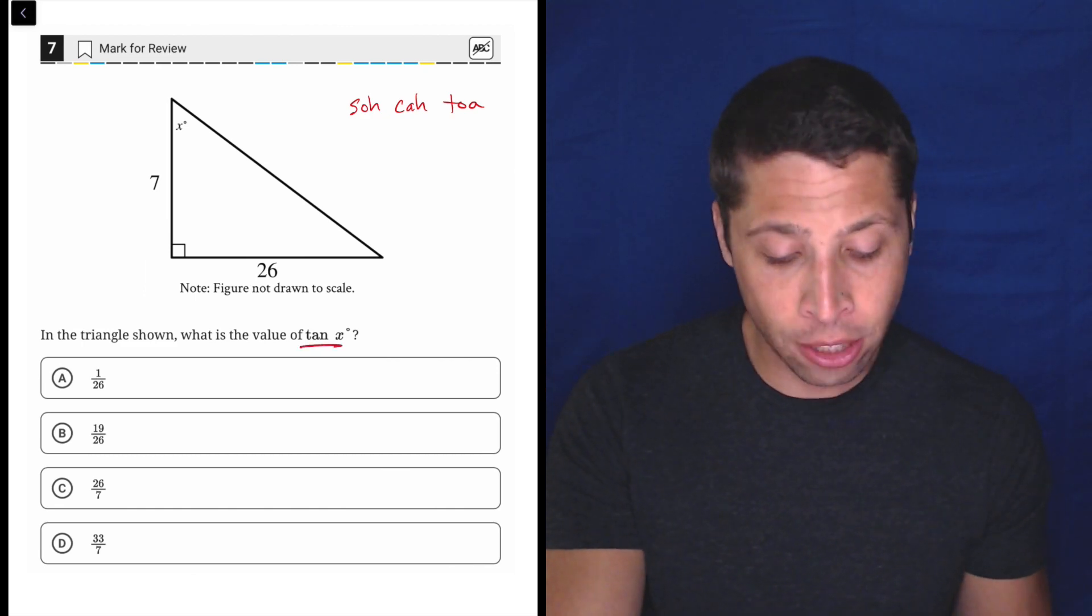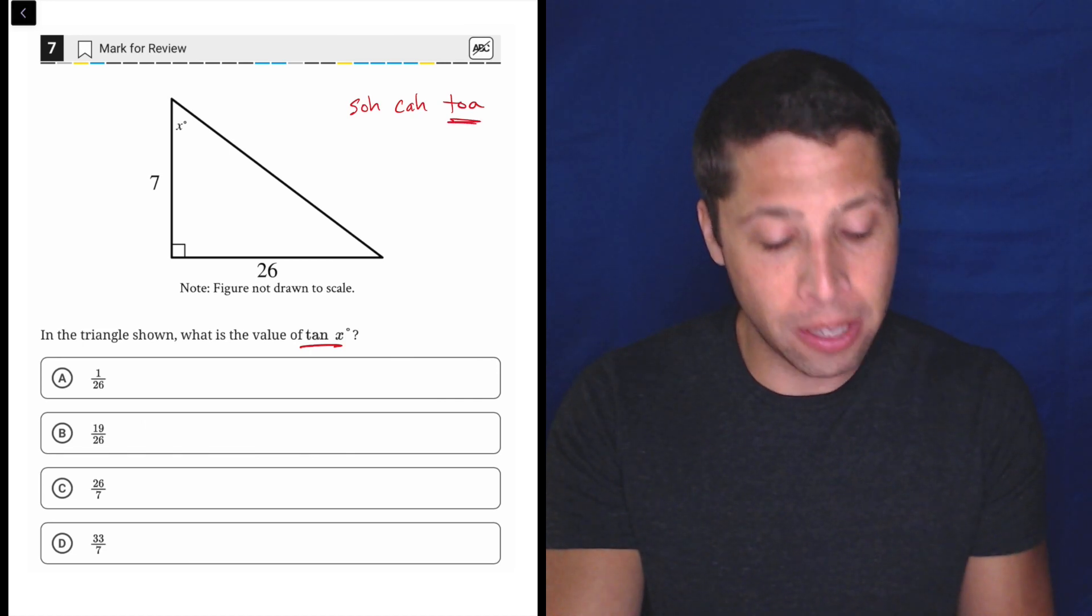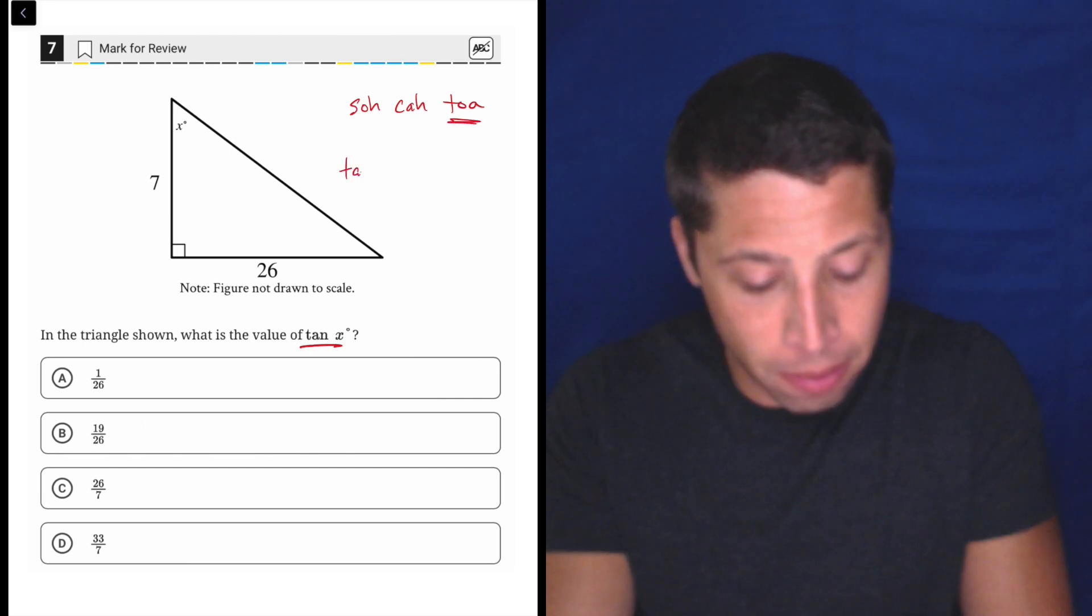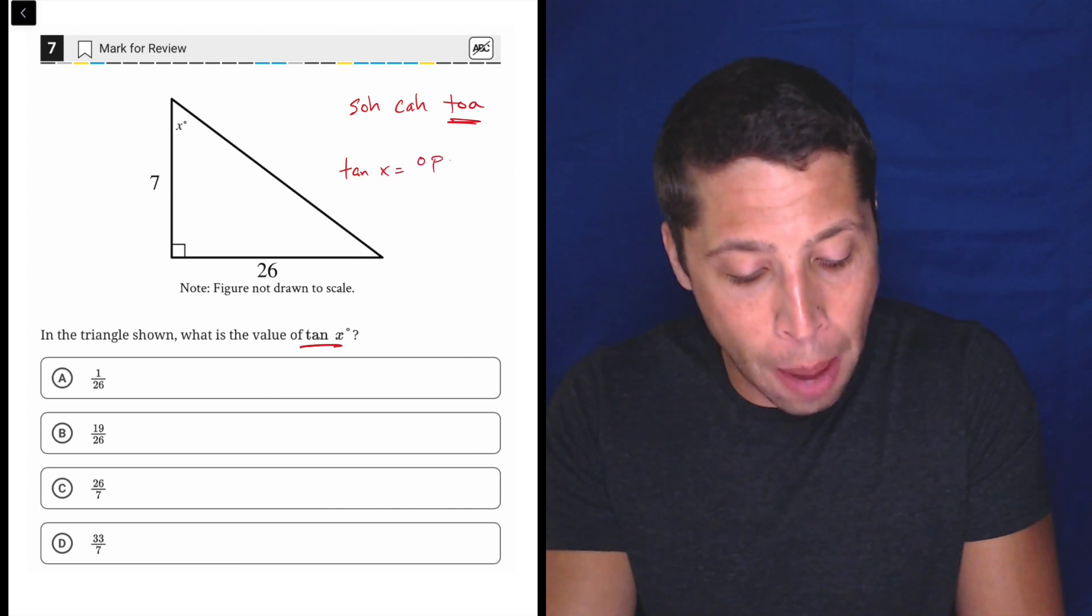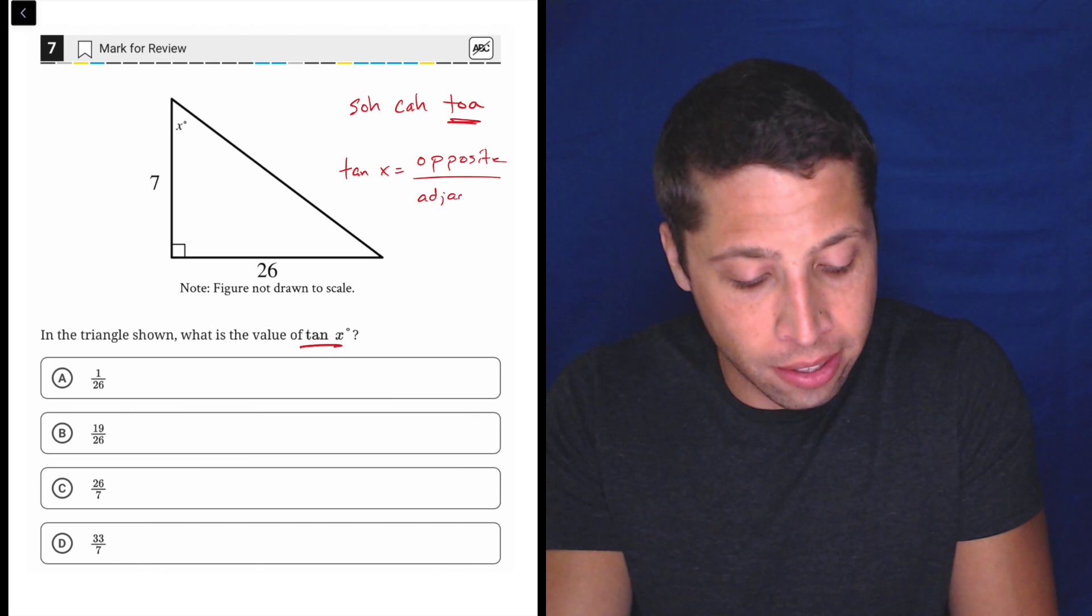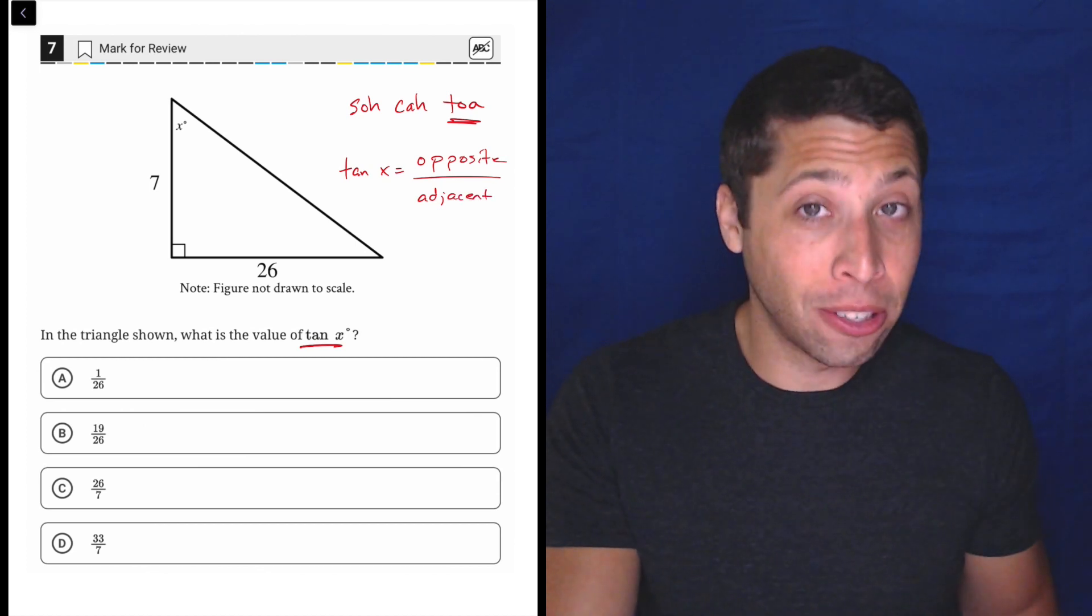In this case, they want the tangent of X, so tangent means TOA. And what does that actually mean? That the tangent of X is going to be the opposite side from our angle over the adjacent side. So luckily they gave us those two sides.